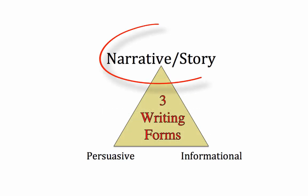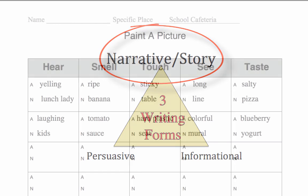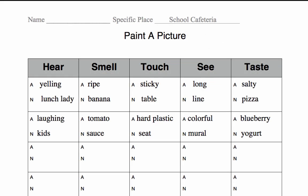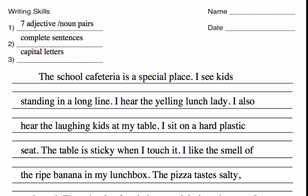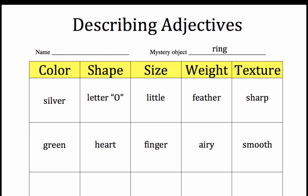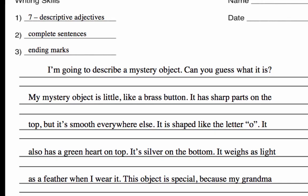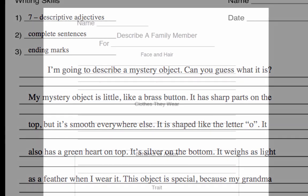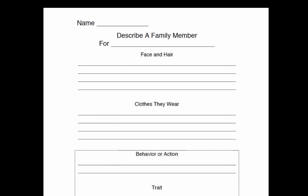This third writing piece will continue your work on narratives. In your first piece, you described a place. In the second piece, you provided lots of descriptive details about an object. This third piece will continue your work on narratives, but you are going to focus on gathering descriptive details about a person.